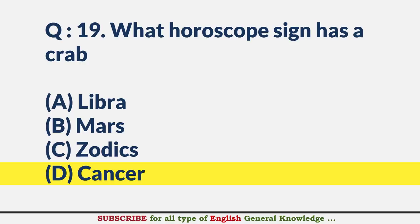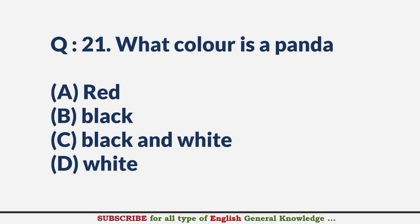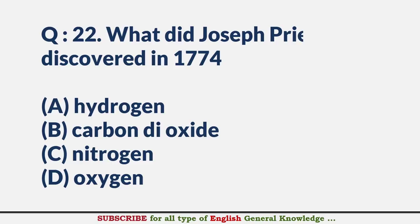How many dots are there on two dice? — Answer A: 42. What color is a panda? — Answer C: Black and white. What did Joseph Priestley discover in 1774? — Answer D: Oxygen.